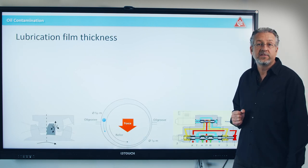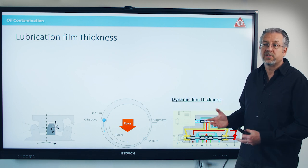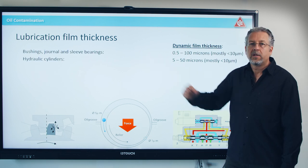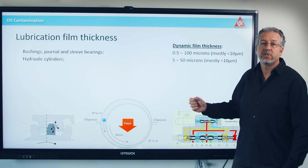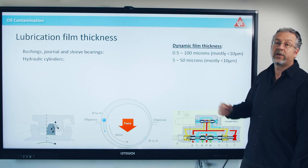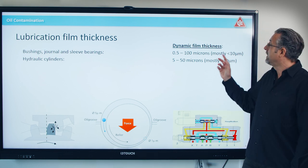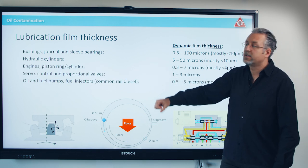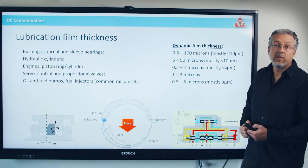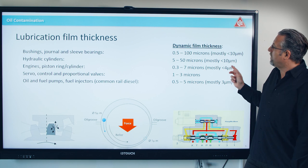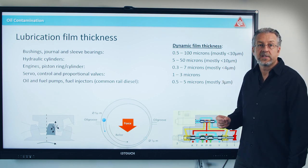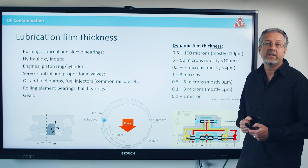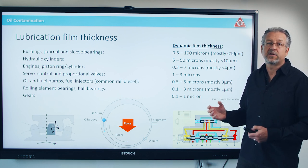If we look at lubrication film thicknesses when the machine is in operation — that's called dynamic film thickness, not when you're holding the bearing in your hand — the biggest ones are journal bearings, bushings, and hydraulic cylinders, which may be up to 100 micron in oil film thickness, but mostly under pressure and load, less than 10 micron. Next, in engines, piston rings, servo valves, different kinds of pumps and fuel systems, you have roughly three to four micron oil film thickness. And the very tiny ones are ball bearings and gears, where you have roughly only one micron in film thickness. So very, very tiny particles will destroy your machine.